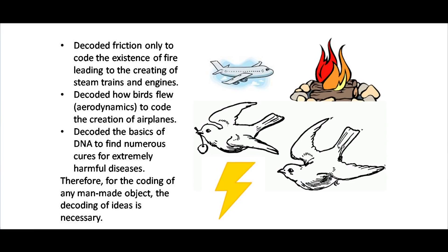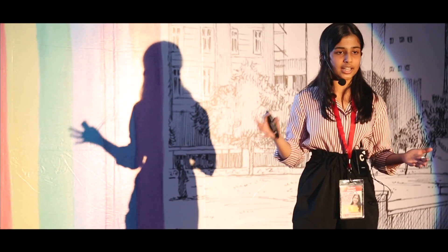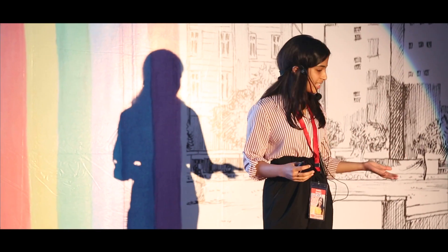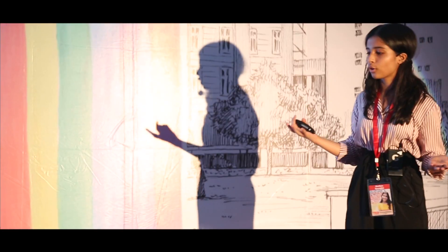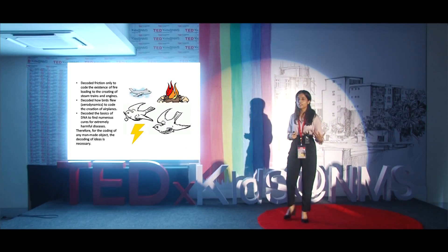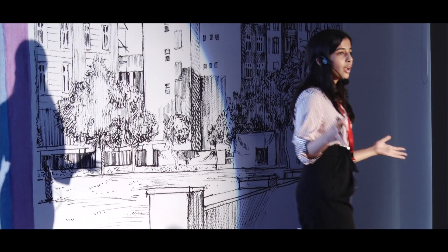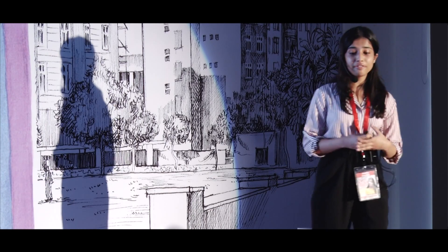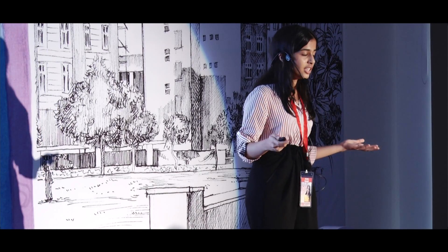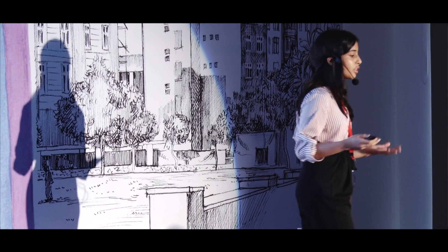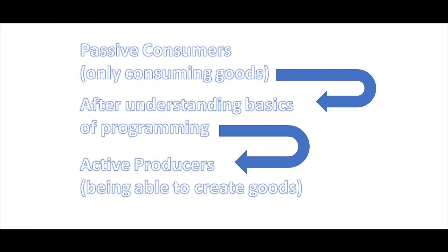Decoding the law behind friction led to the coding of fire, and now we've created steam engines and ignitions. The development of society went from understanding the basics of DNA to literally conquering diseases, finding codes of cure for them. Back when we just understood the basics of aerodynamics, to fast-forwarding where we are today — literally flying in airplanes. All of this development of society brings a fundamental shift in the way we view technology, turning us from passive consumers to active producers.